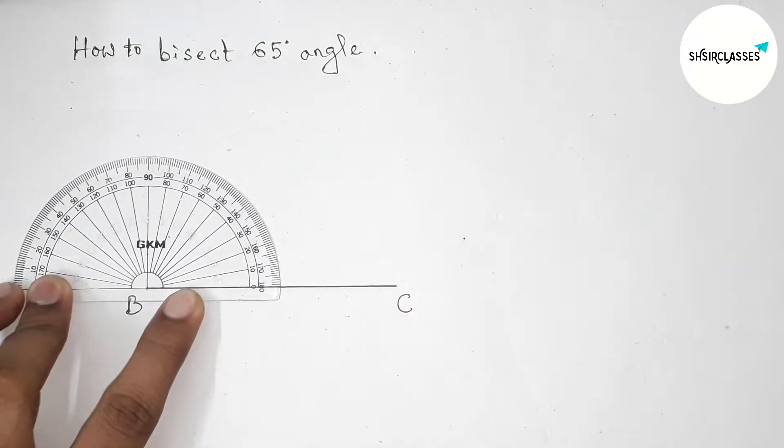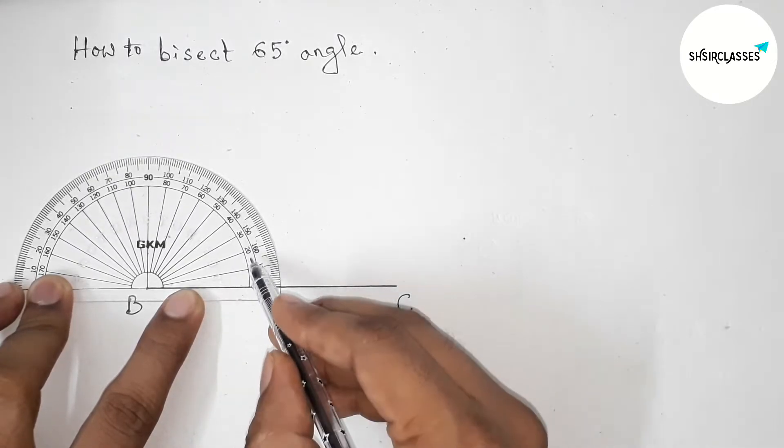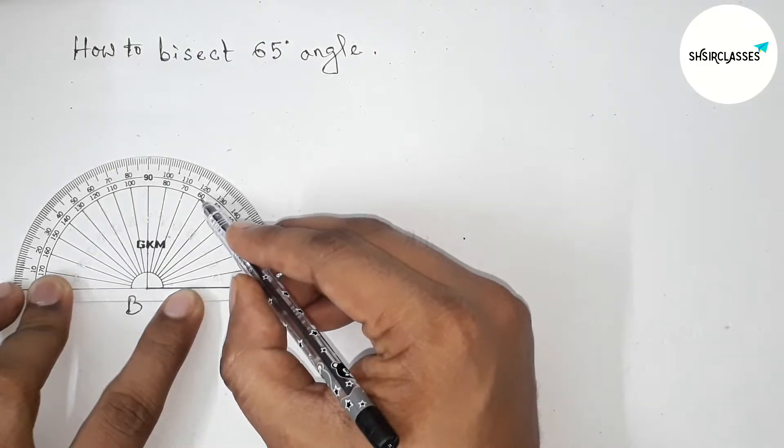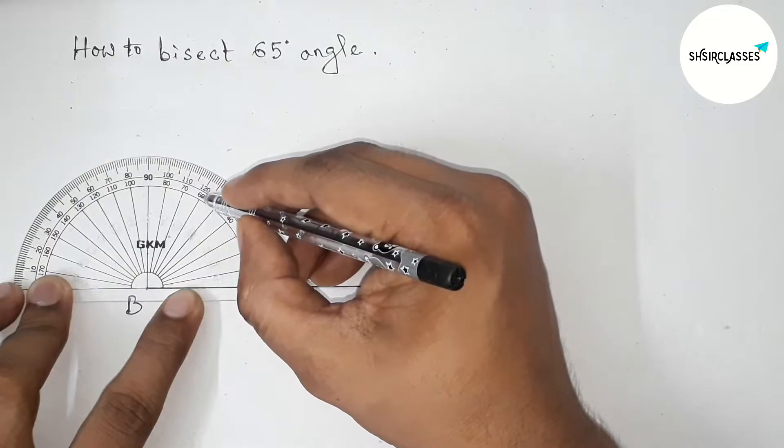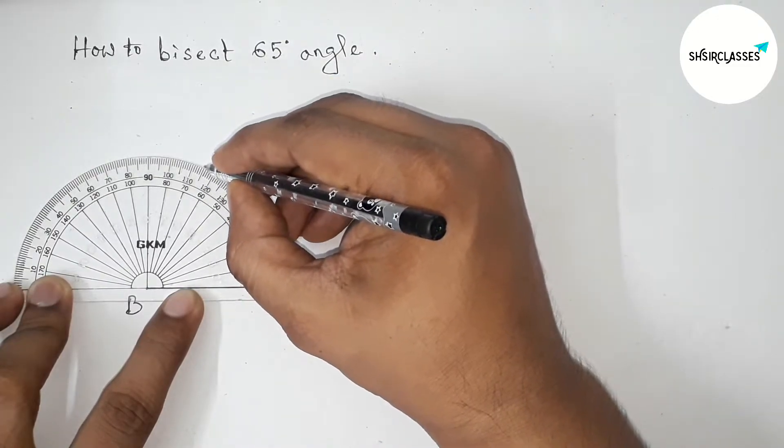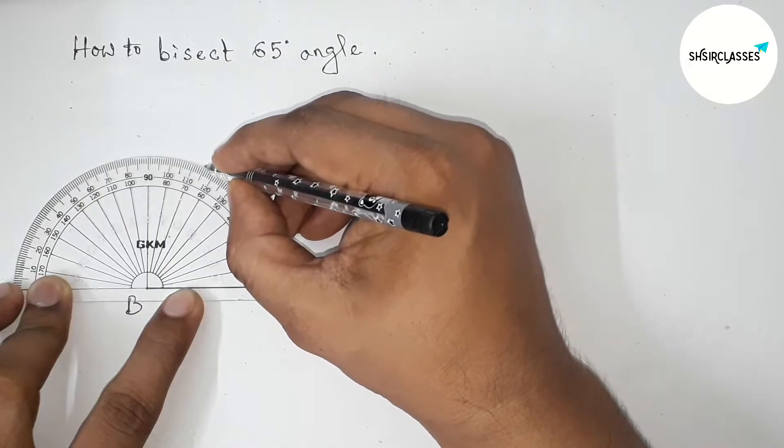Putting the protractor on point B perfectly, now counting to 65 degrees. Starting at 0, 10, 20, 30, 40, 50, 60, and 70. Between 60 and 70, we can get 65 degrees.